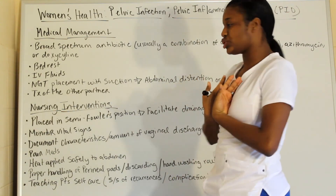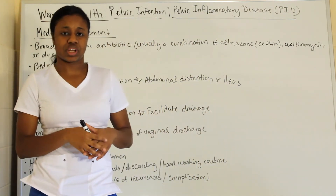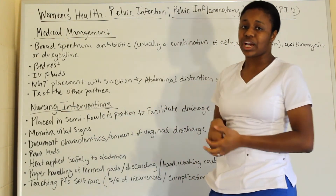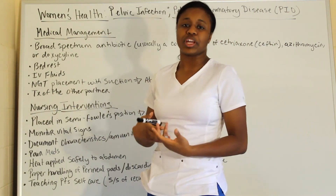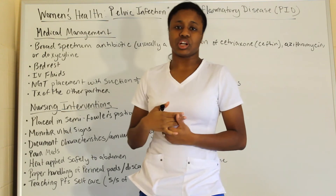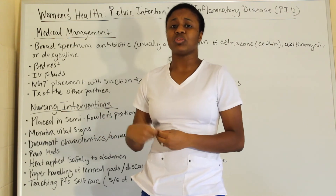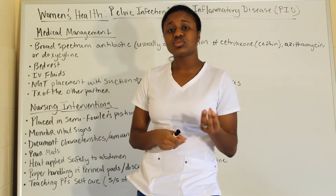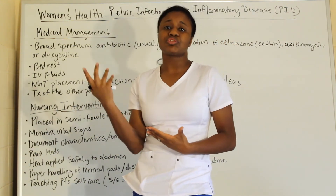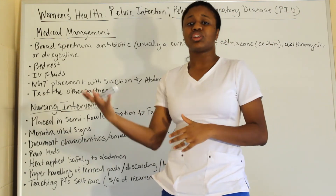For nursing interventions, place the patient in Semi-Fowler's position to facilitate drainage of vaginal discharge. Monitor vital signs, as they tell the story of the patient's condition. Document the characteristics and amount of vaginal discharge — note whether it is milky, clear, thick, or loose, and track the volume and any changes in color or appearance.